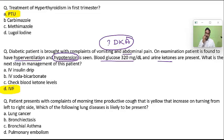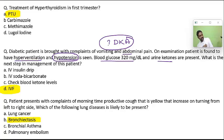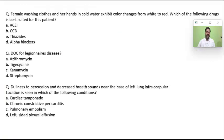A patient presents with complaints of morning-time productive cough that increases on turning from left to right side. Whenever there is copious sputum (mucoid or purulent) with postural variation, the most important disease is bronchiectasis. If the patient has left-sided bronchiectasis and turns to the left side, secretions by gravity stay in the left lung; if the patient turns to the right side, secretions go into the right lung, irritate it, and cause severe cough — this is postural variation.